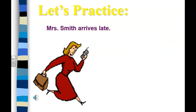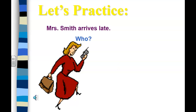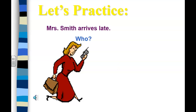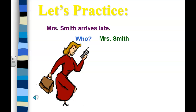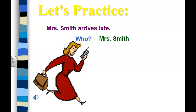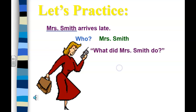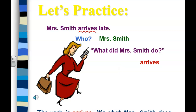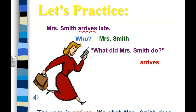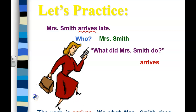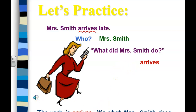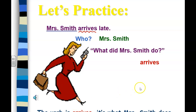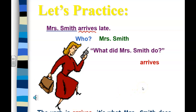'Mrs. Smith arrives late.' Who is the sentence about? Mrs. Smith. What does Mrs. Smith do? Arrives. She must be upset on the phone! Arrives is what Mrs. Smith does — that's our verb.